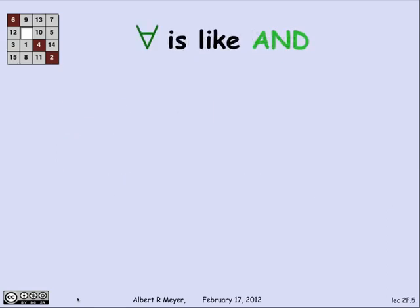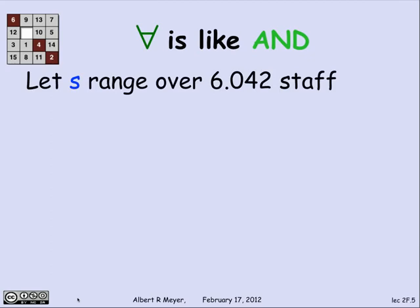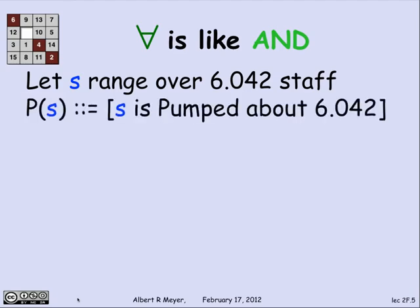So let's see how that would work. The upside down A for all acts like an and. And to understand what it means, let's look at this example. Let's let a variable s range over the staff members in 6042 at this term, of whom there are about 30 counting the graders. Let's define a predicate that depends on the variable s called P of s that says that s is pumped about 6042. They're enthusiastic about being on the staff.